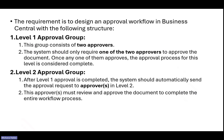Level two approval group: after level one approval is completed, the system should automatically send the approval request to a second level approver or multiple approvers, who must review and approve the document to complete the entire workflow process. In level two also, we can have a single or multiple approvers and only one of the two approvers is required.